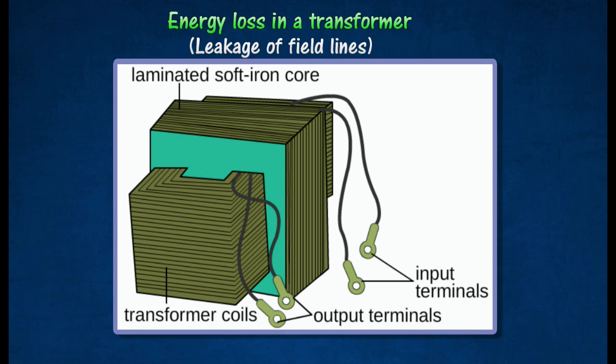This can be improved by winding the secondary coil on top of the primary coil. Practical transformers have secondary coils wound on top of the primary coils to ensure that all the field lines from the primary coils pass through the secondary coils.